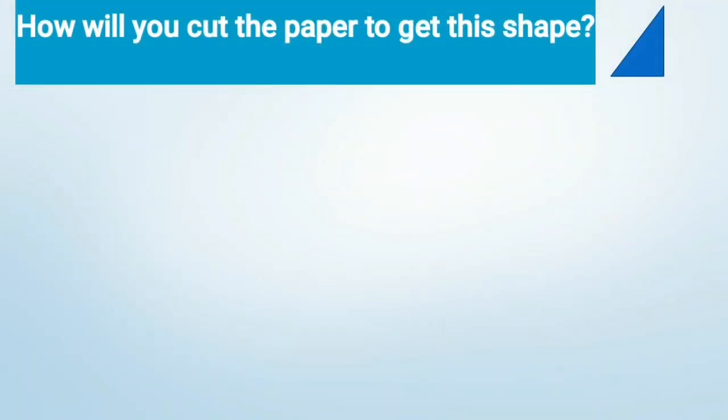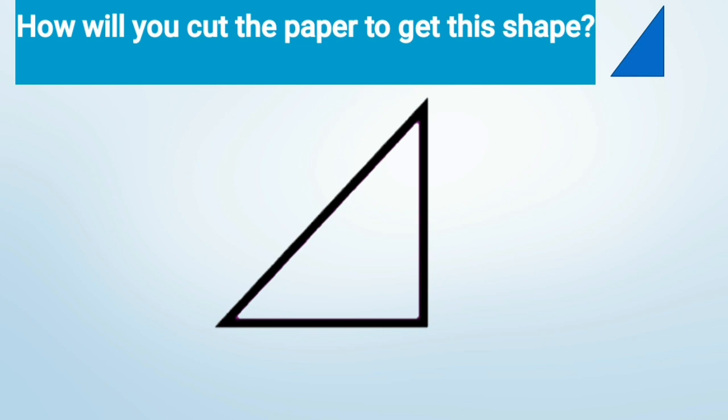How will you cut the paper to get this shape? Here we are given a piece of paper. We will look at it carefully and observe its shape. How many vertices does this figure have? Yes, we can see it has 3 vertices. How many sides does this figure have? Again, it has 3 sides. And what shape is it? It is a triangle. It has 3 sides and it has 3 vertices.